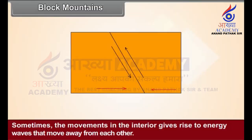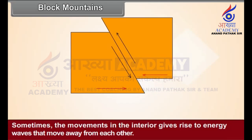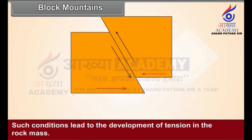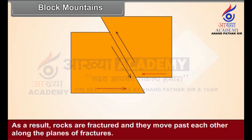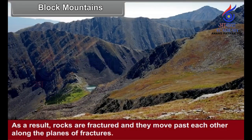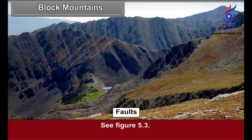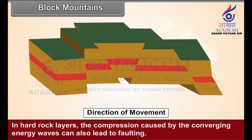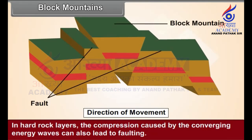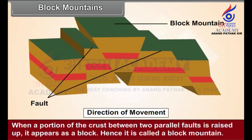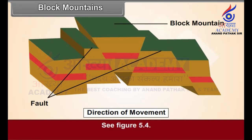Block mountains: Sometimes the movements in the interior give rise to energy waves that move away from each other. Such conditions lead to the development of tension in the rock mass. As a result, rocks are fractured and they move past each other along the planes of fractures. These fracture lines are called faults. See figure 5.3. In hard rock layers, the compression caused by converging energy waves can also lead to faulting. When a portion of the crust between two parallel faults is raised up, it appears as a block. Hence, it is called a block mountain.